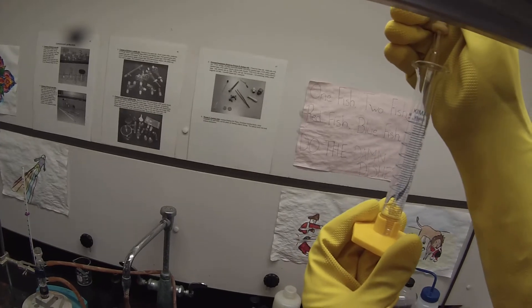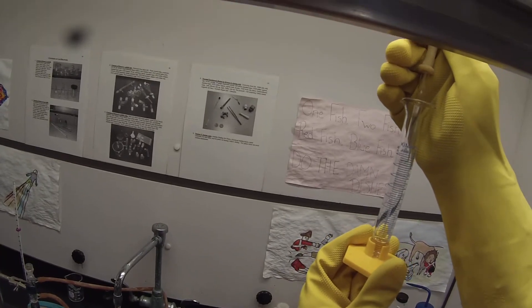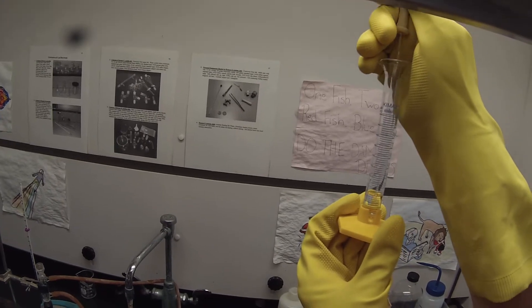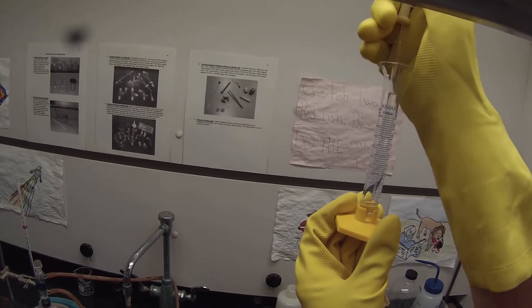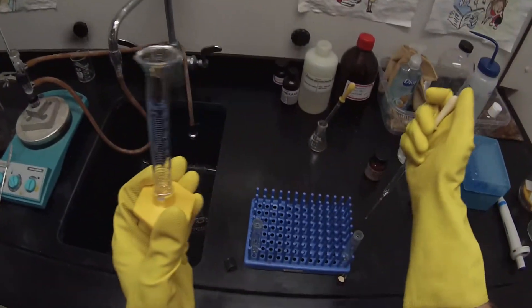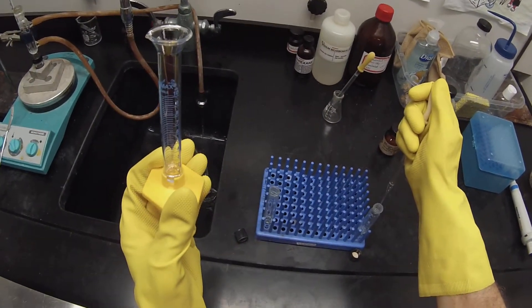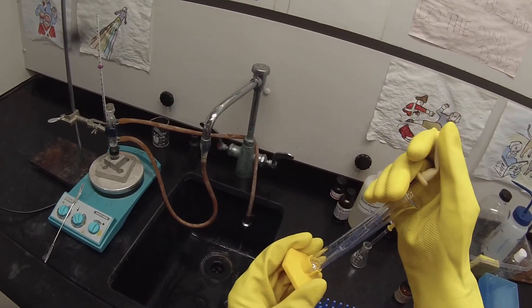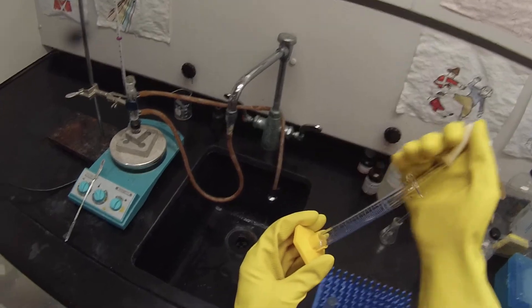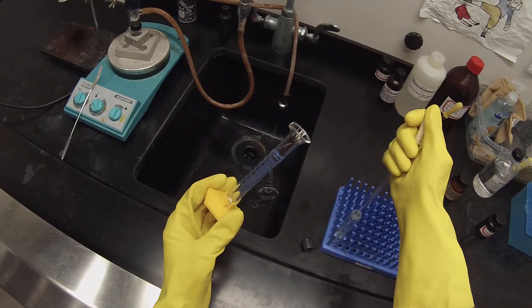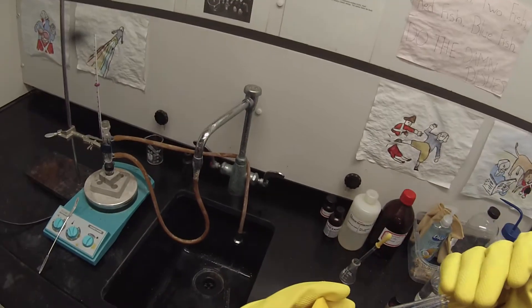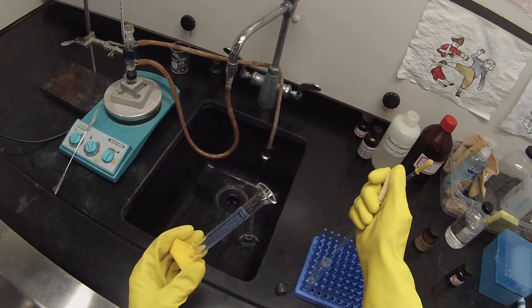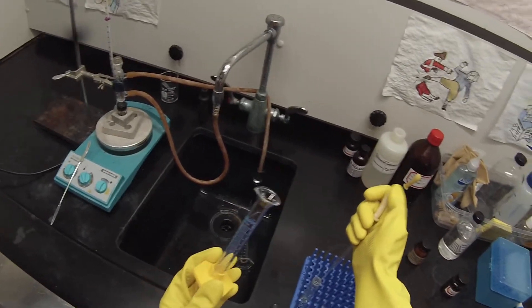And this of course will float on top of that aqueous layer. A milliliter of pentane for that one. And another milliliter of pentane for the other one. So what's going to happen when we set this reaction up by adding the t-butanol is it will react and then the products will immediately go into the pentane layer and thus avoid any further reaction with the acid.